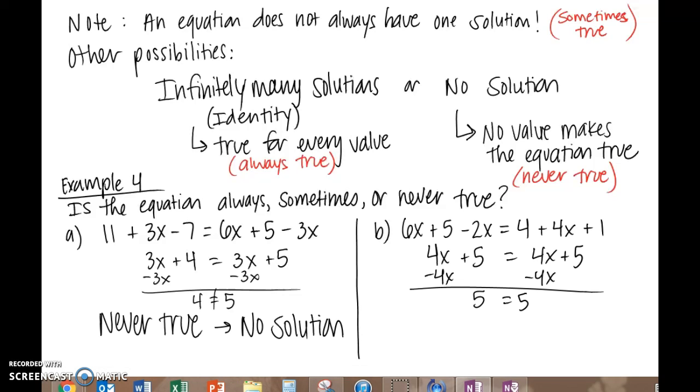For part B, we find out that 5 equals 5, once we do a couple combining like terms, and that is a true statement. So that means that this equation is always true. It is also known as the identity, and it has infinitely many solutions.